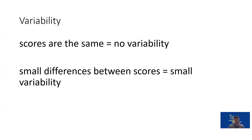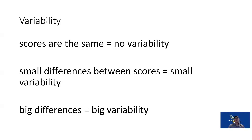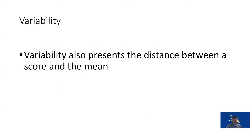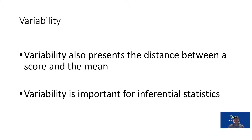Small differences between scores, like just eights and nines, means small variability. If we have scores ranging from ones and twos all the way through fives, sixes, eights, nines, and tens, that's a large variability — a lot of difference between scores from each participant. Variability can tell us the distance between the scores and the mean, which is important for our inferential statistics.